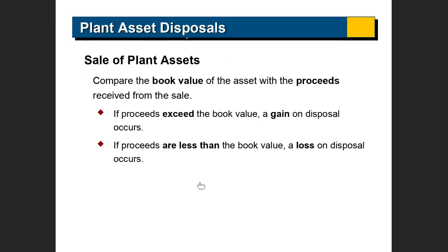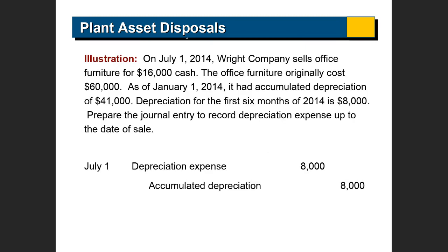If the amount that you get exceeds the book value, there is a gain. If the amount that you get is less than the book value, then it's a loss. So let's take a look: this company sells office furniture for $16,000. The office furniture originally cost $60,000 and the accumulated depreciation is $41,000.